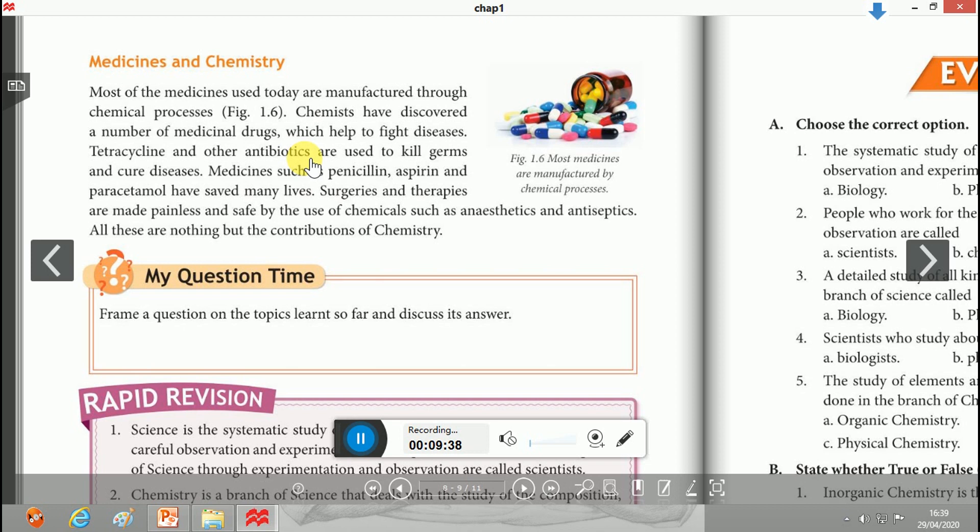Antiseptics are used to kill microorganisms. Antipyretics are used to decrease body temperature. Analgesics are basically used as painkillers. Penicillin can be used as a painkiller, so it is also a good analgesic.